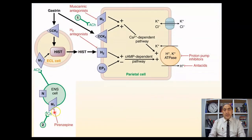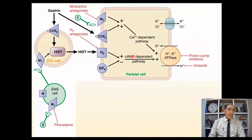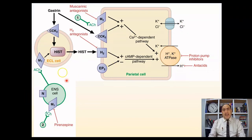In detail: acetylcholine activates M1 receptors on ENS cells, which produce acetylcholine that activates muscarinic receptors on ECL (enterochromaffin-like) cells that produce histamine. Histamine activates H2 receptors, which activate adenylate cyclase, converting ATP to cyclic AMP. Cyclic AMP activates protein kinase, which triggers movement of the proton pump from the cytoplasm into the cell membrane, producing H⁺ ions exchanged for K⁺, which combines with Cl⁻ to form HCl. Using non-selective muscarinic antagonists would produce too many adverse effects.